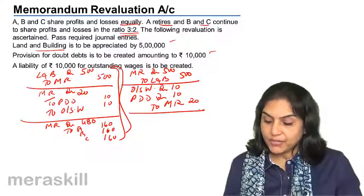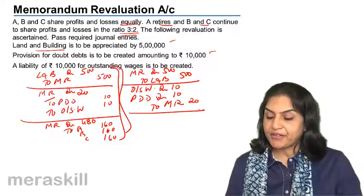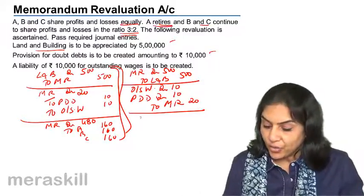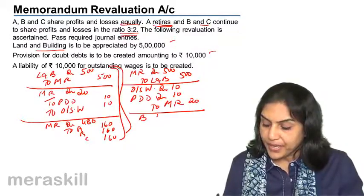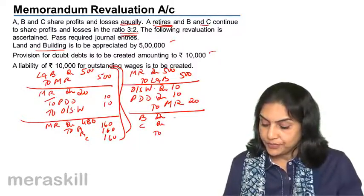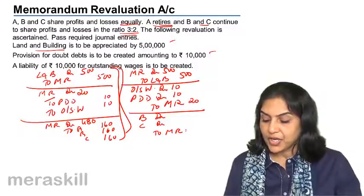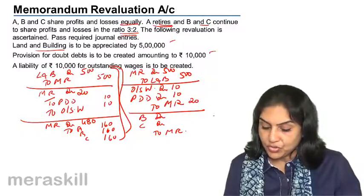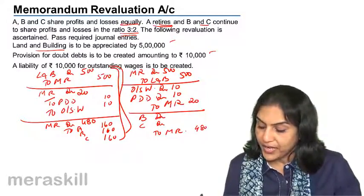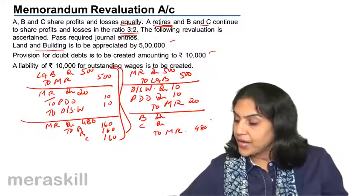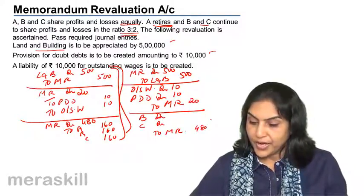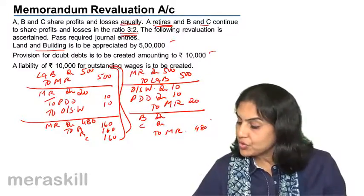Therefore, now we get a loss because memorandum revaluation has been debited by 5,00,000 and credited by 20,000. This loss will go to the accounts of the remaining partners — since A has retired — B capital account debit and C capital account debit to memorandum revaluation account. This is in the new ratio of 3:2. The amount here is 4 lakh 80,000, distributed in the new ratio 3:2.